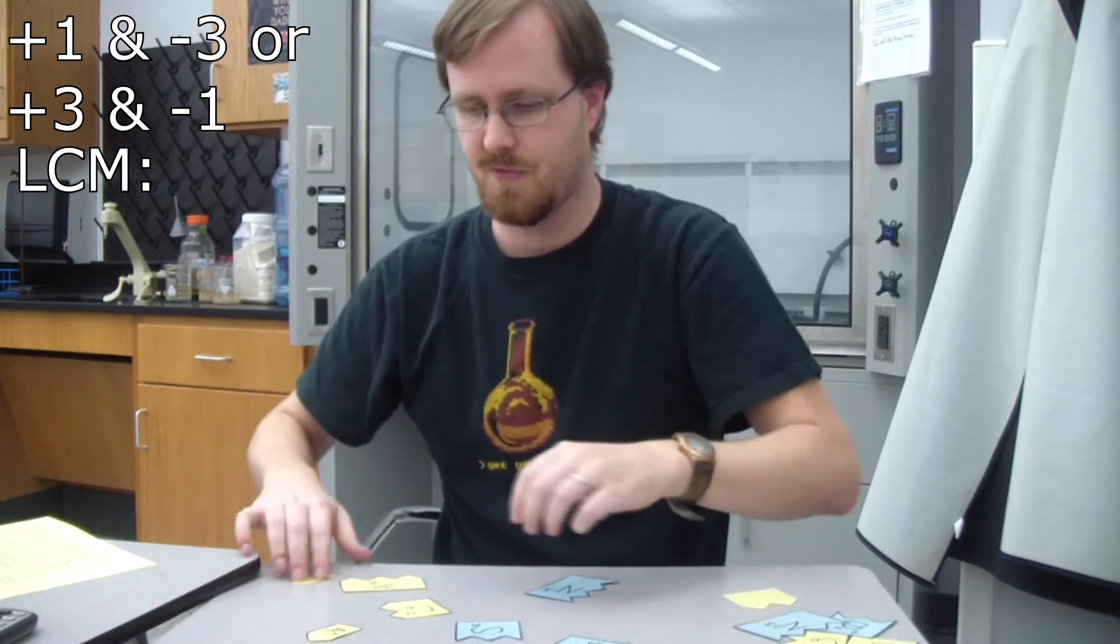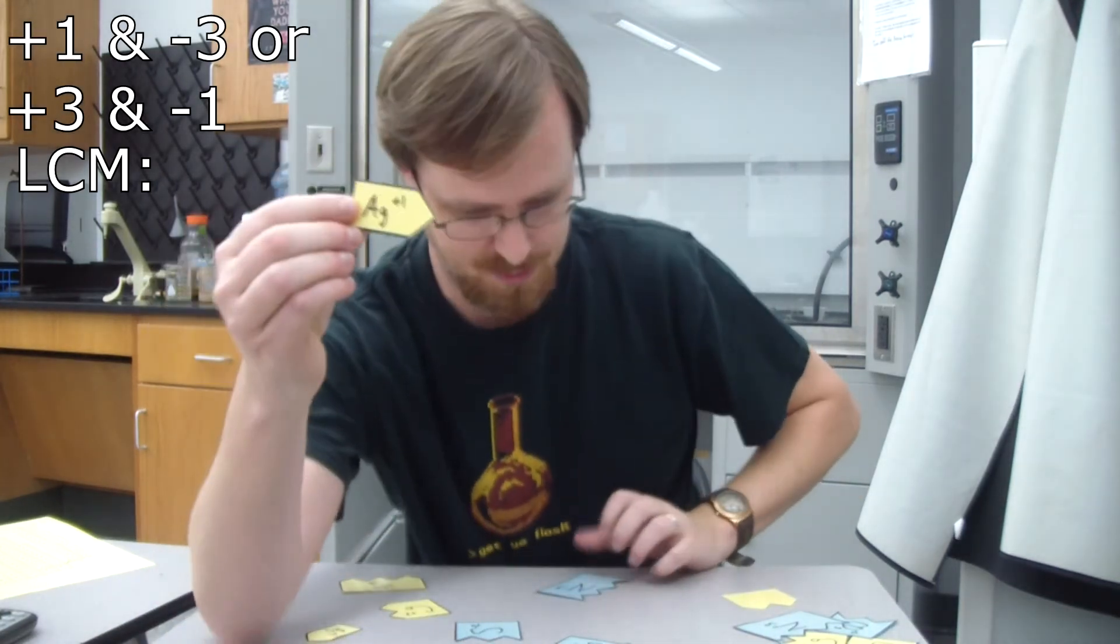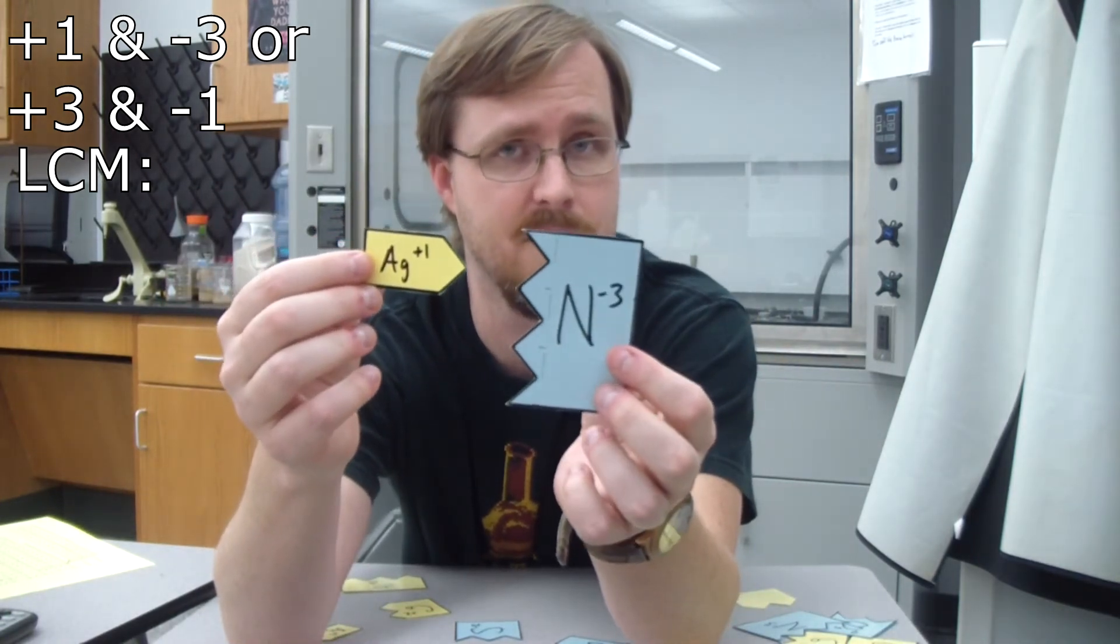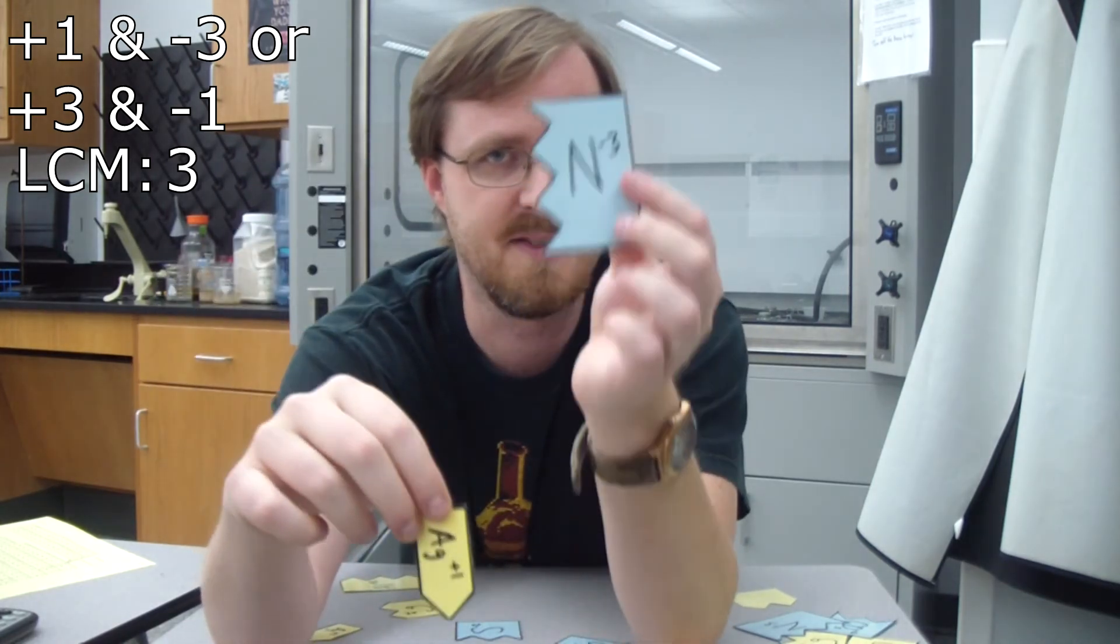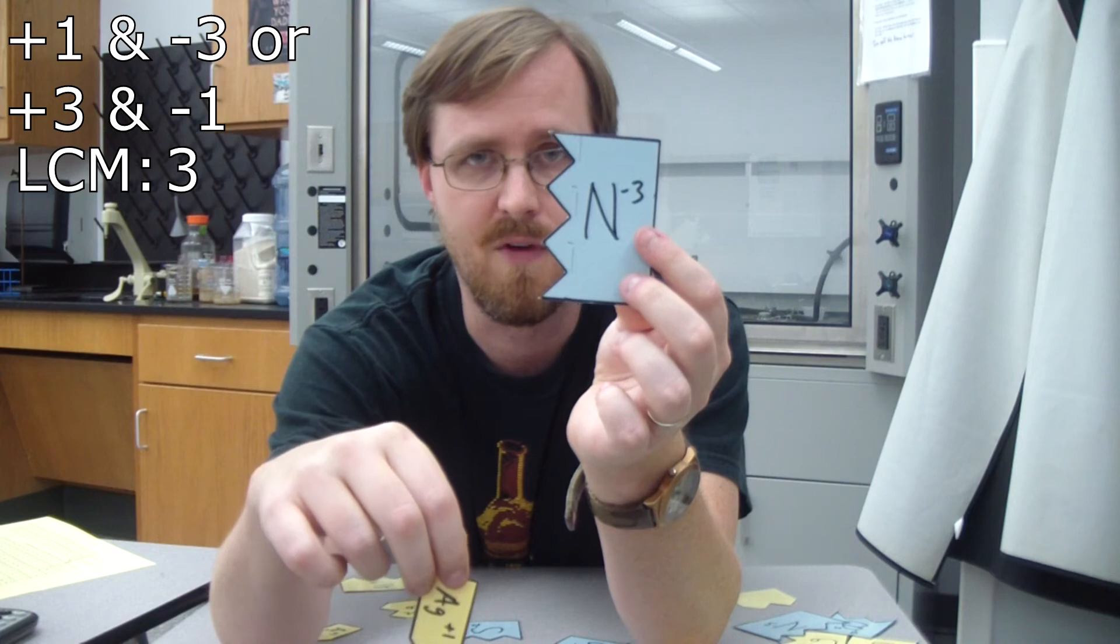If you have a 1 and a 3, so like if it was a silver plus 1 and then the nitrogen negative 3, well the lowest common multiple there is 3. So I'm going to need 3 silvers to balance out the negative 3 from the nitrogen.